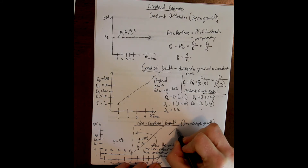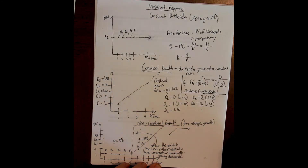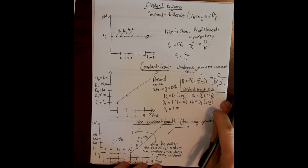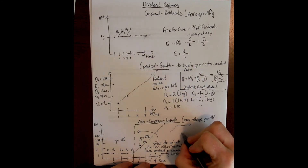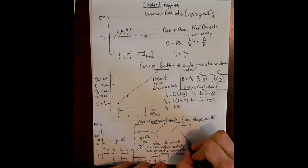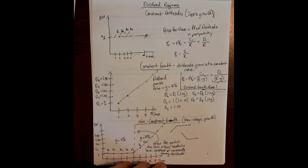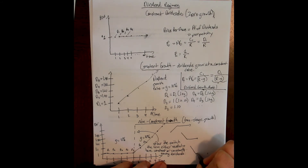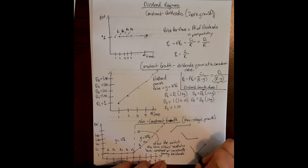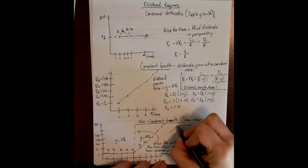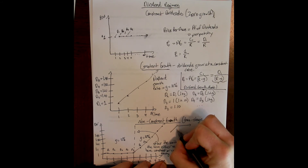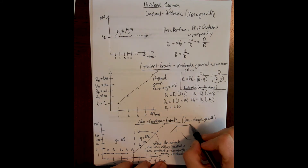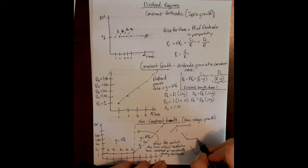Some other examples: we may have a firm that has growing dividends and then switches to a constant dividend, or a firm that has shrinking dividends and then switches to a constant dividend, or a firm with shrinking dividends whose fortunes reverse and it ends up with increasing dividends. The key is that in all of these, after the regime switch, we are either at constant, constantly growing, or potentially constantly shrinking dividends.